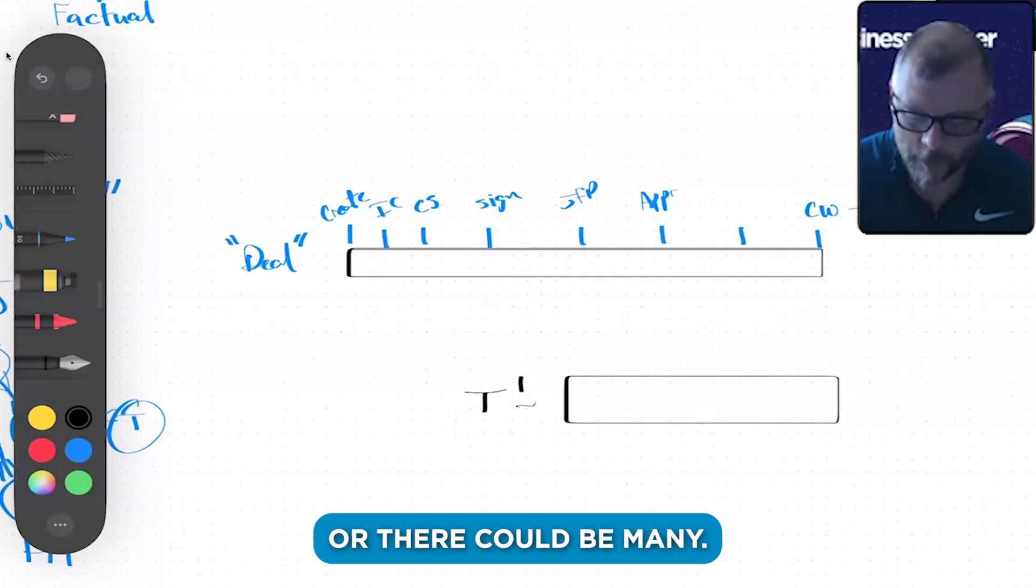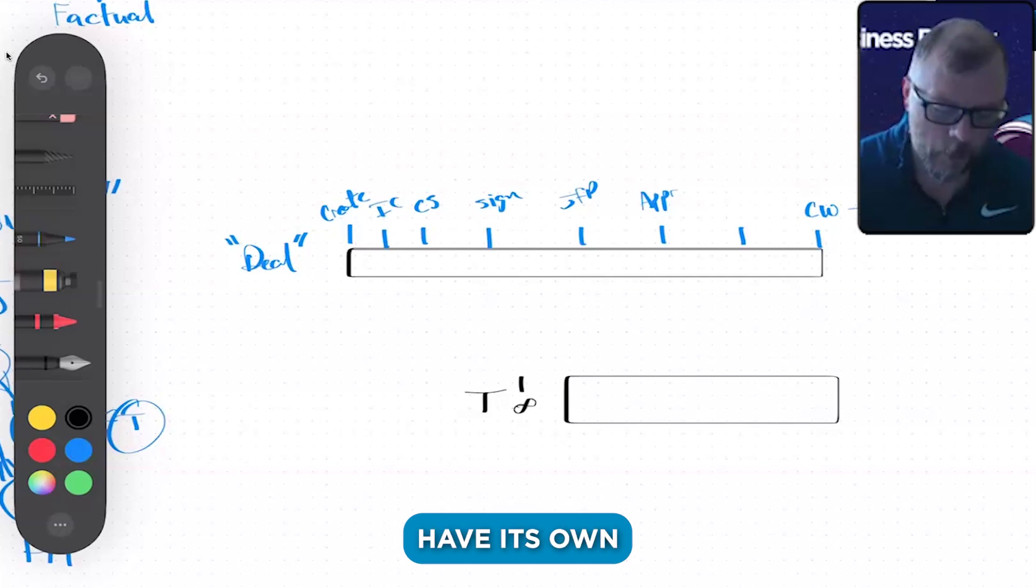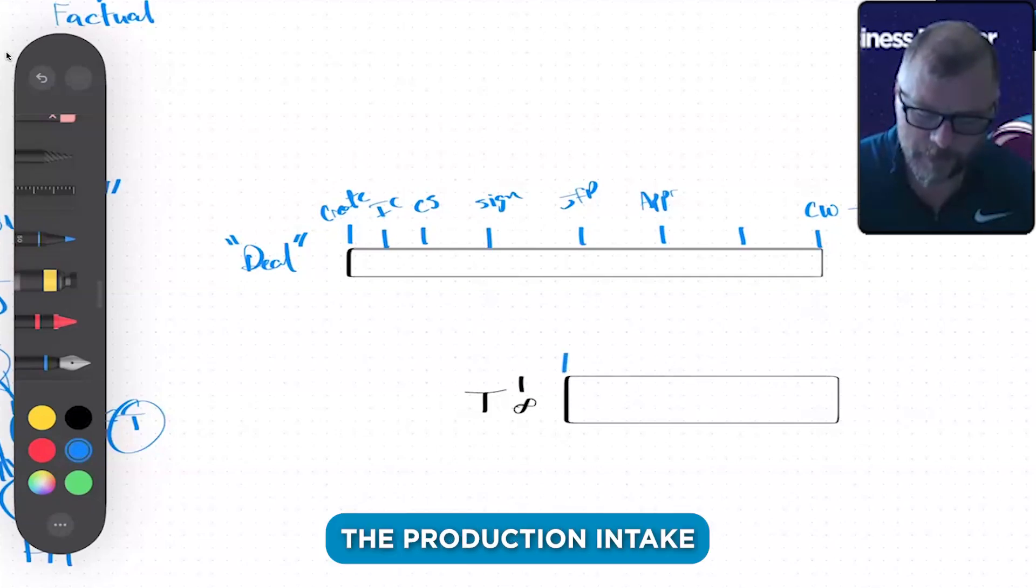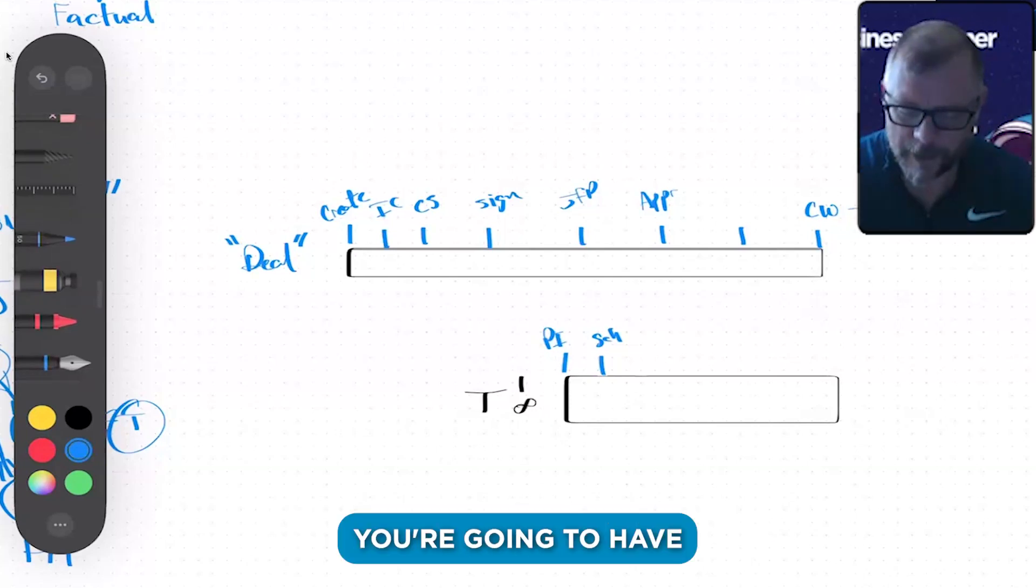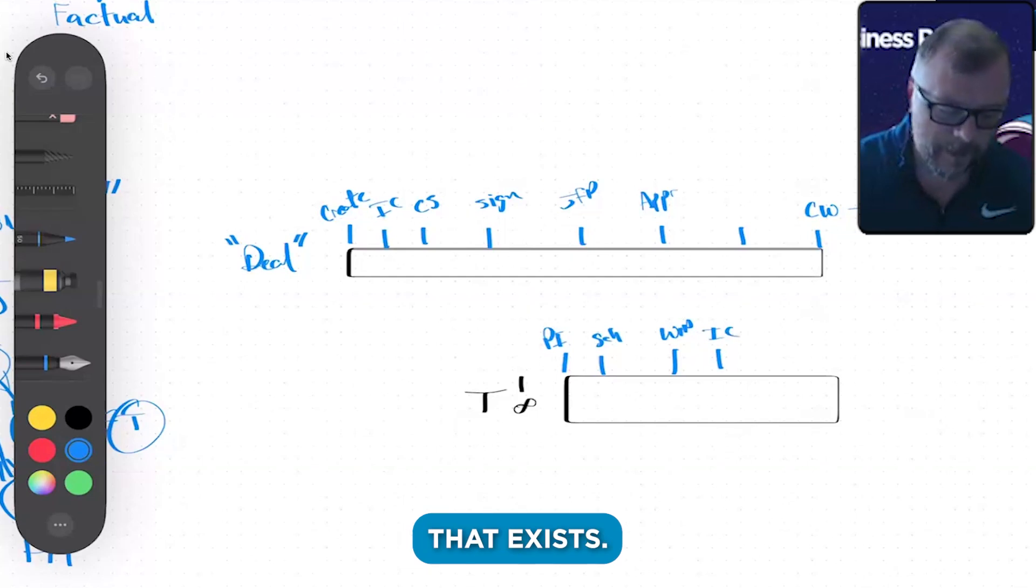That ticket is going to go through more stages—have its own set of stages—because you're going to have the production intake, and then you're going to have to schedule it. You're going to have a scheduled job, and then you're going to have your WIP (work in progress), and then you're going to have the install complete. So it's going to have its own journey that exists.